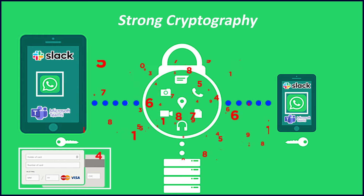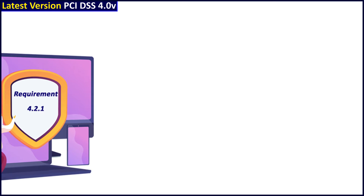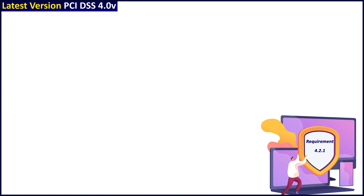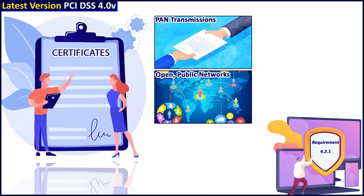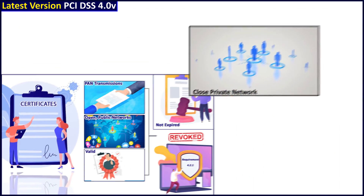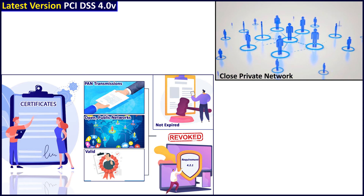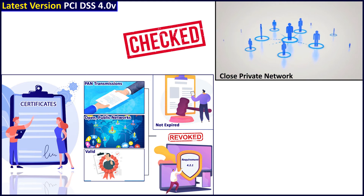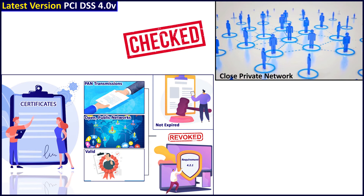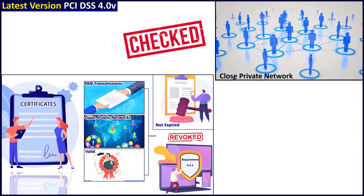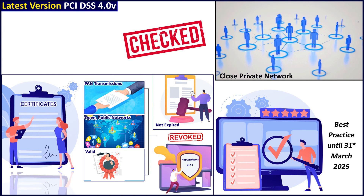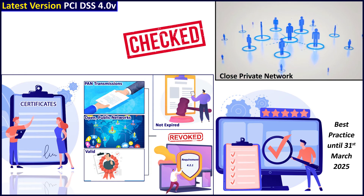There is an additional requirement, 4.2.1, which highlights the need to confirm that certificates used for PAN transmissions over public networks are valid and not expired or revoked. This was not being checked earlier, but the new standard requires it. This is currently a best practice until 31st March 2025, when all these requirements become a mandate.